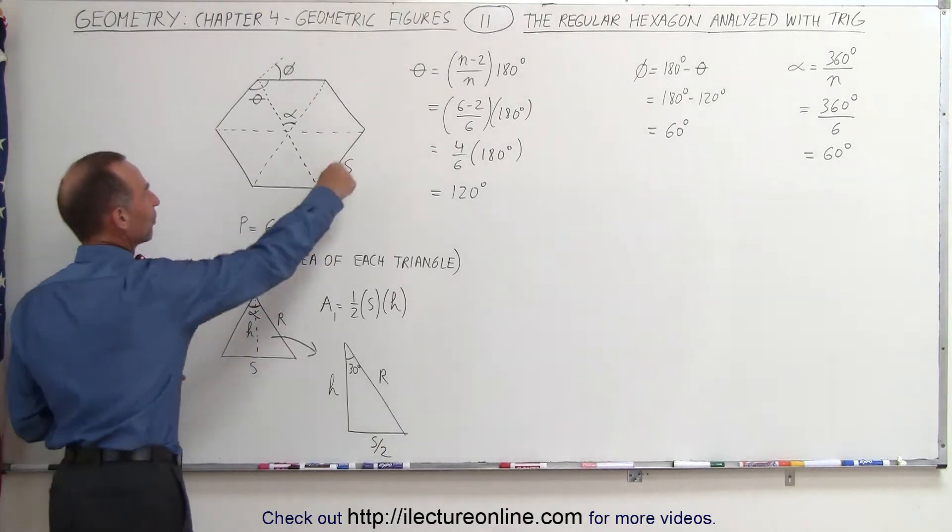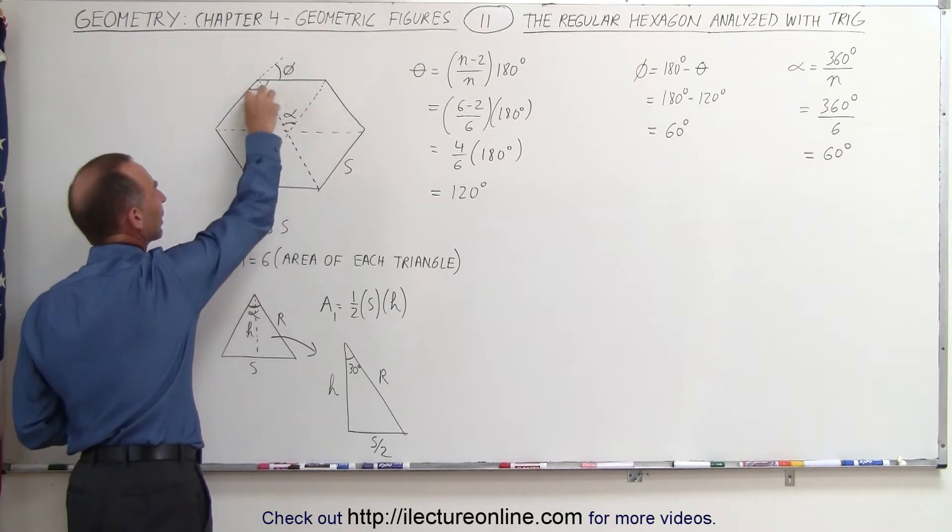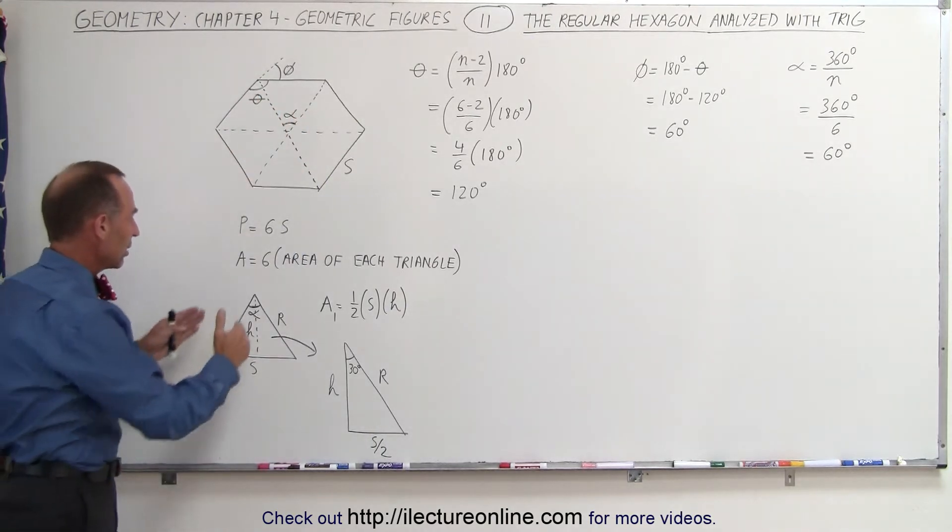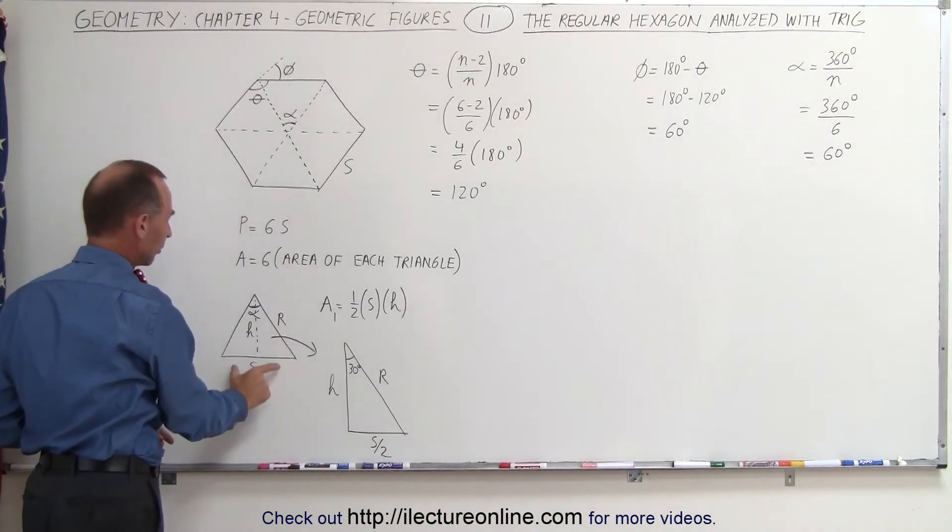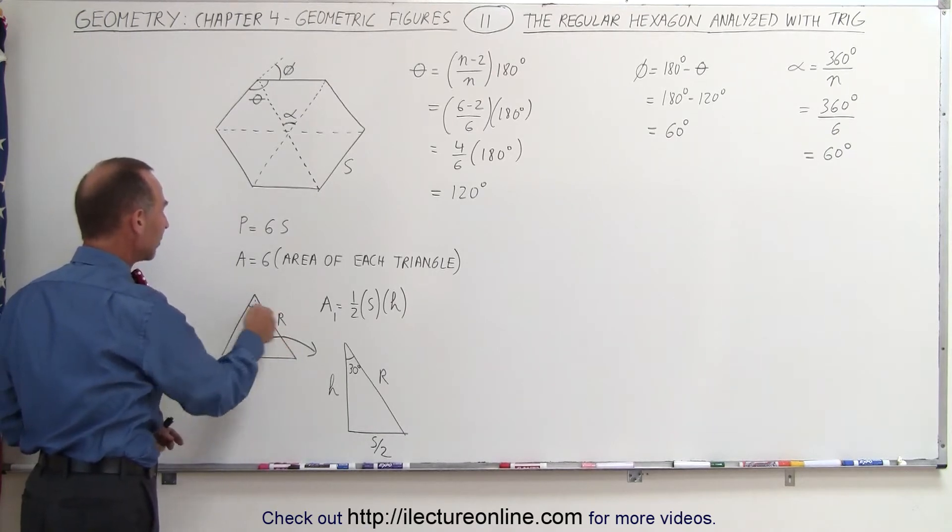From the last video, we have a regular hexagon that we divided into six equal triangles. Here we've drawn one of the triangles where the bottom is equal to the side of the hexagon, S. We have the height of the triangle, H, and R, the two legs of the triangle.